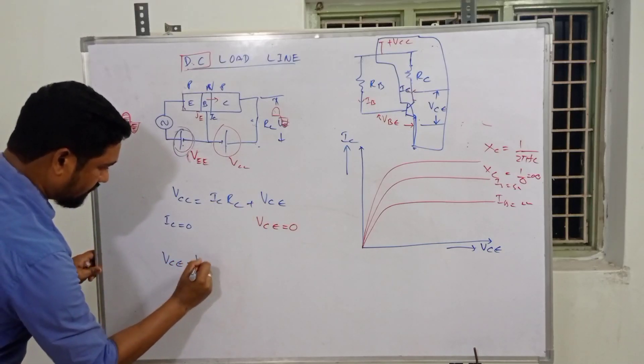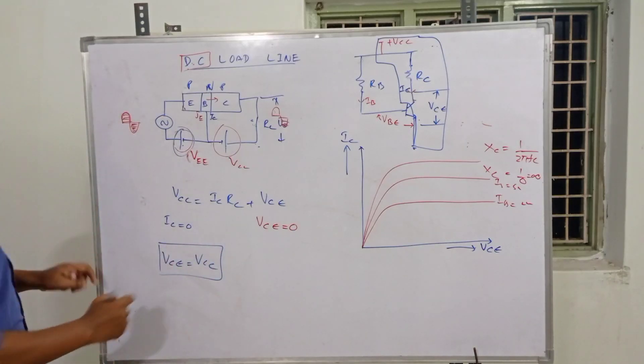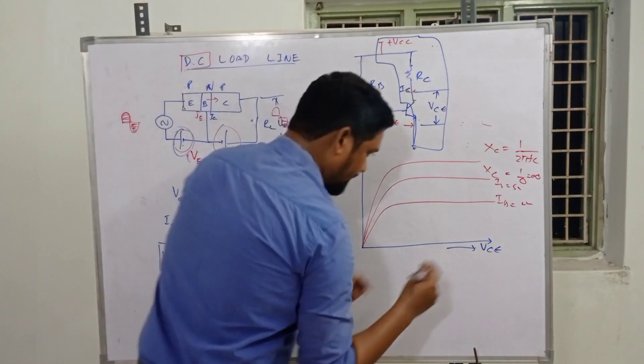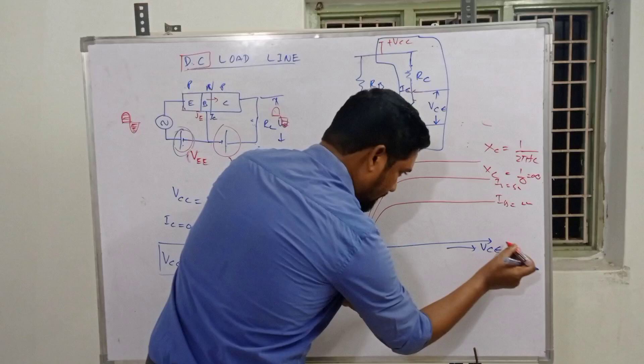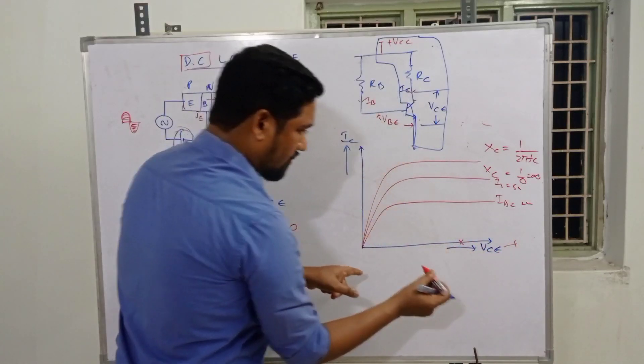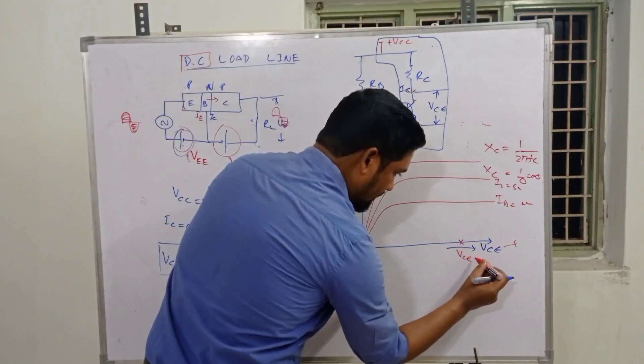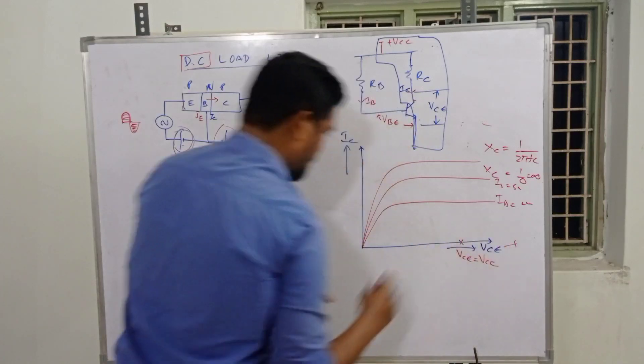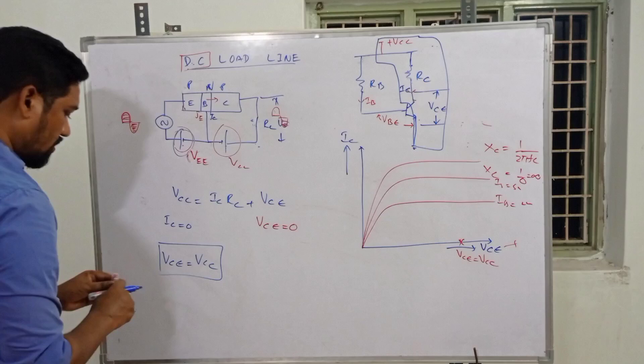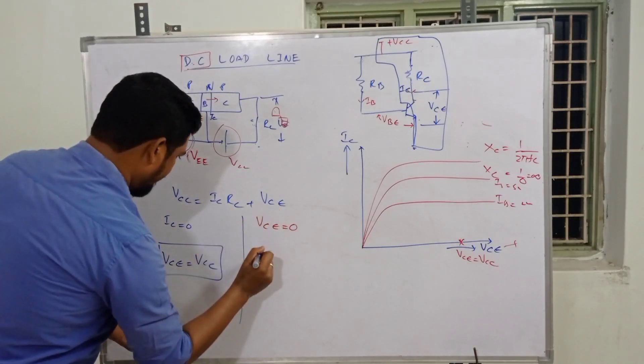If VCC is some 12 volts or 15 volts, we mark that point on the VCE axis. Let's say VCE equals VCC in volts - this is the first point on the output characteristics when IC equals zero.